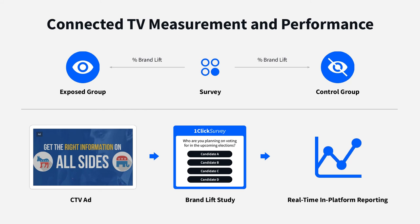When running a campaign through StackAdapt, you can measure persuasion across any of the channels we offer: display, video, CTV, OTT, audio, and native. For example using CTV — we'll run your CTV ad to an exposed group that will see your ad and a control group that will not. We'll then retarget both audiences with your desired question, such as 'who are you planning on voting for in the upcoming elections?' and gather responses comparing the control group versus the exposed group. The question can be fully customizable to whatever the advertiser would like to measure. While some other persuasion lift studies limit what you can ask, we give you full control. These surveys are non-incentivized and run in standard banner placements across the web.